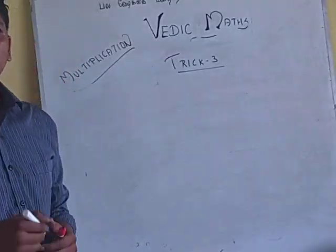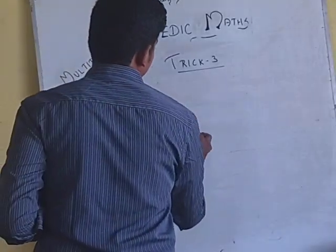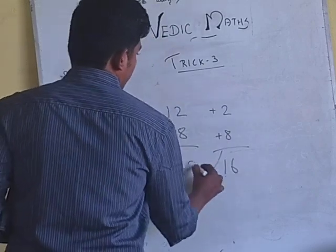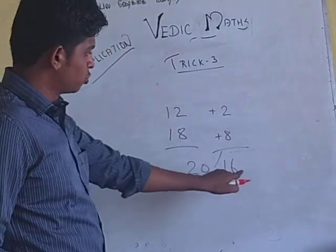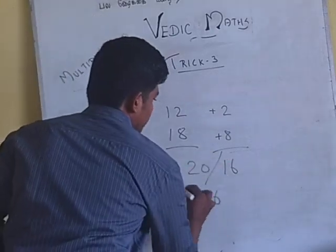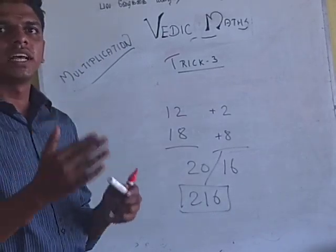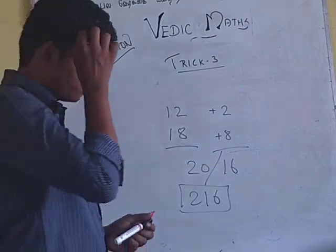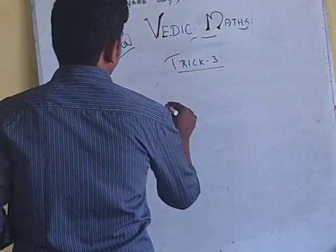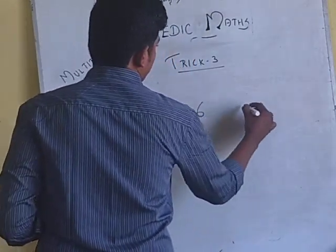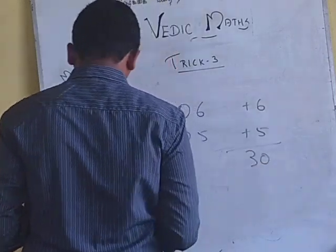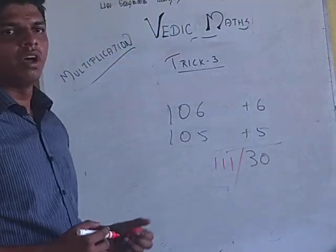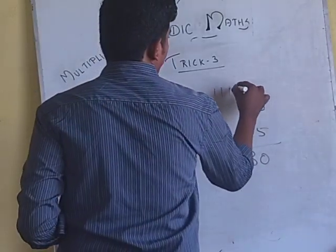I will show you more examples. For example 12 times 18. This is the one plus 2, this is the plus 8. 8 times 2 is 16. This is the plus 9, so we will get 10. 12 plus 8 is 20, and 2 times 8 is 16. So answer is 216. For example 106 into 105. Here in the plus 6, here in the plus 5, multiply gives 30. 111, so answer is 11130. This would be your answer.